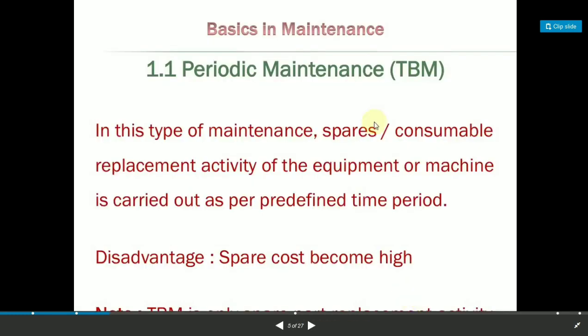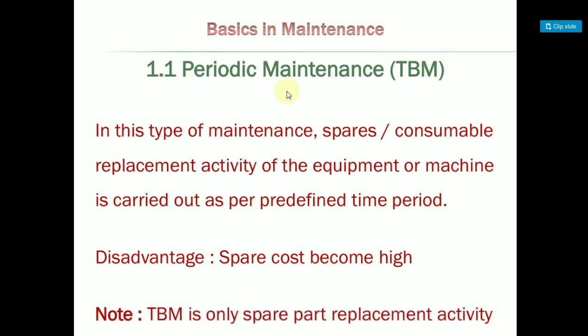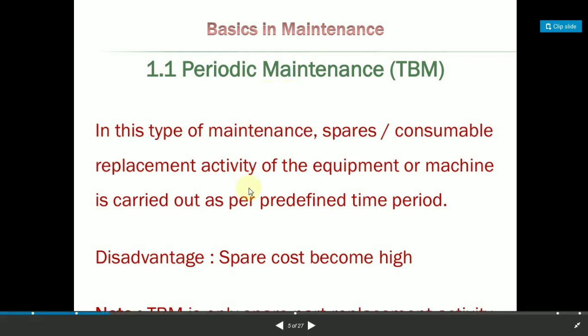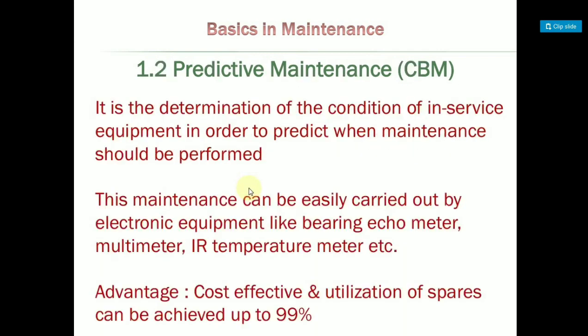Periodic maintenance is time-based maintenance performed at a specific scheduled time. For example, if you have a hydraulic machine or a pump, the maintenance condition may be set for every 6 months. This is time-based maintenance involving spare parts replacement. Condition-based maintenance, on the other hand, is predictive maintenance.